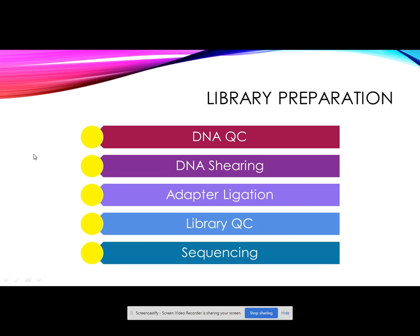We now move on to library preparation, which depends on the type of sequencing system used. The basic steps are: first, DNA quality control to ensure sufficient concentration and purity; second, DNA shearing, which is dependent on the specific library kit; third, adapter ligation to the sheared DNA sequences — adapters are generally provided with the Illumina kit; fourth, library quality control; and finally, the libraries are loaded onto the sequencer for sequencing.